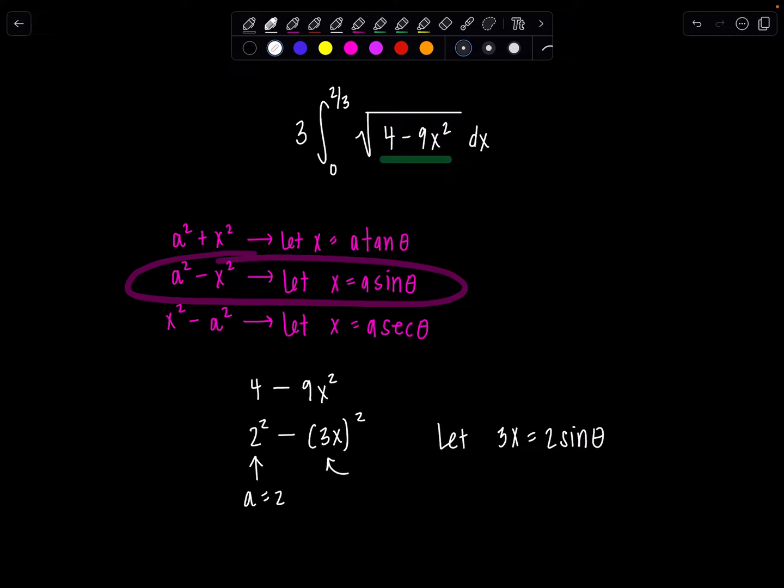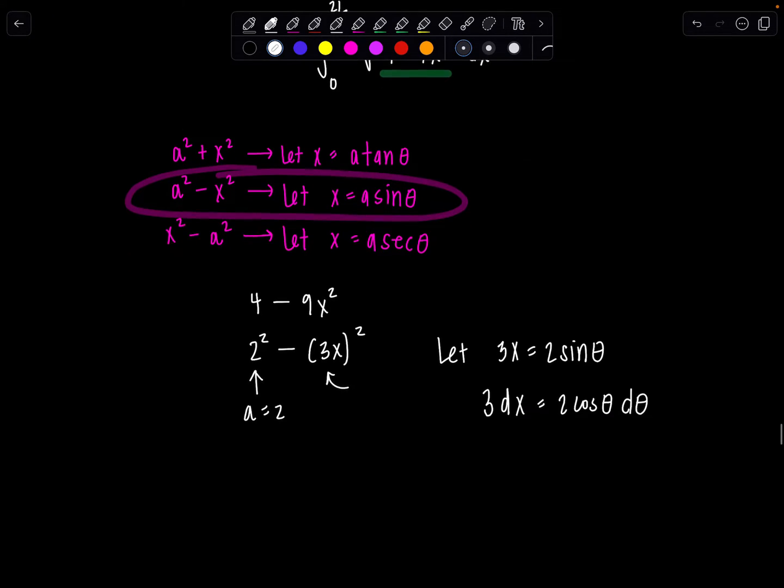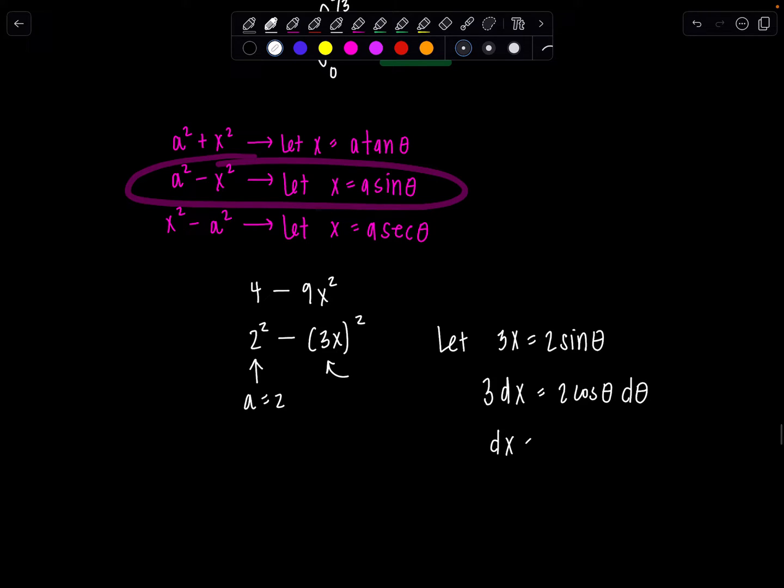So then from here, now we're going to go ahead, work on switching all of our limits and the differential to be in terms of theta. So taking the derivative of both sides, we have 3 dx equals 2 cosine theta d theta, and then that means dx is 2/3 cosine theta d theta.